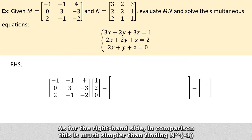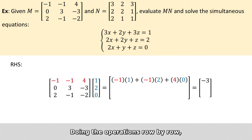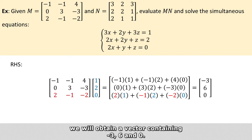As for the right-hand side, in comparison, this is actually much simpler than finding the inverse of N. Doing the operation row by row, we will obtain a vector containing -3, 6, and 0.